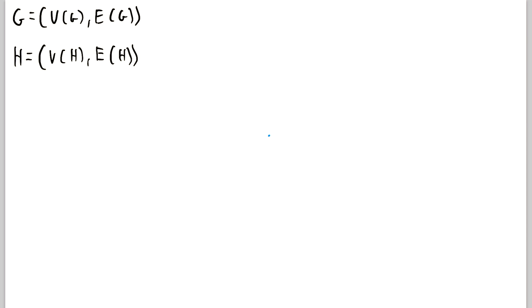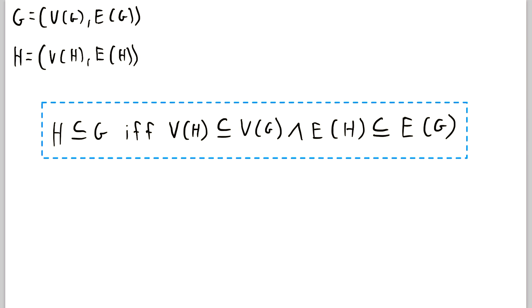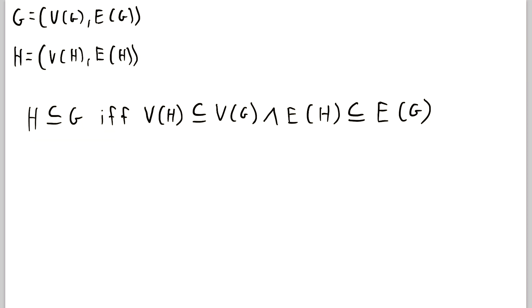Then let's take a look at the definition of subgraph. So here it is. H is a subgraph of G if and only if the vertex set of H is a subset of the vertex set of G and the edge set of H is a subset of the edge set of G. Basically saying H is a subgraph of G if everything in H is also in G.